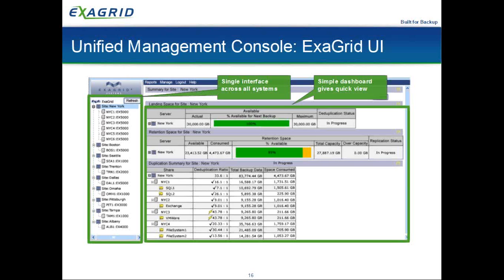The same information you see on screen also gets emailed to you on a nightly basis — the same green and yellow bars and statistics. You don't even have to log into ExaGrid to get this information; it will be in your mailbox when you come in the morning. Many customers tell us they even forget the ExaGrid is there — it does what it's supposed to do.